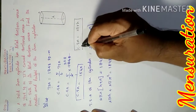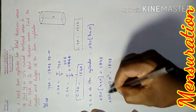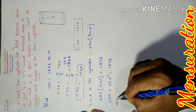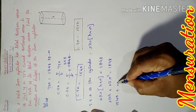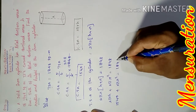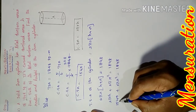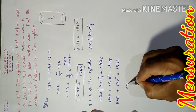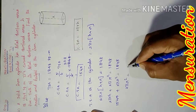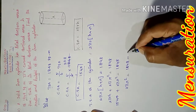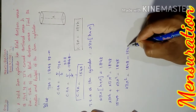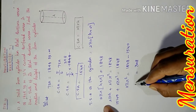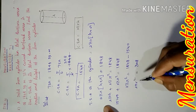We know that 2πrh equals the CSA value of 1540. Substituting on the left-hand side: 1540 + 2πr² = 1848. Therefore 2πr² = 1848 minus 1540, giving us 2πr² = 308.